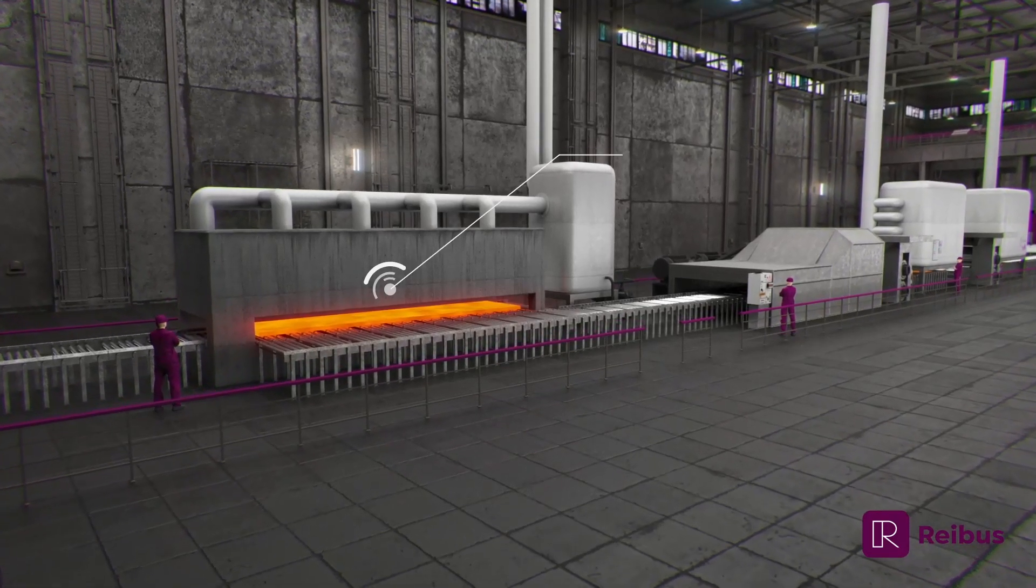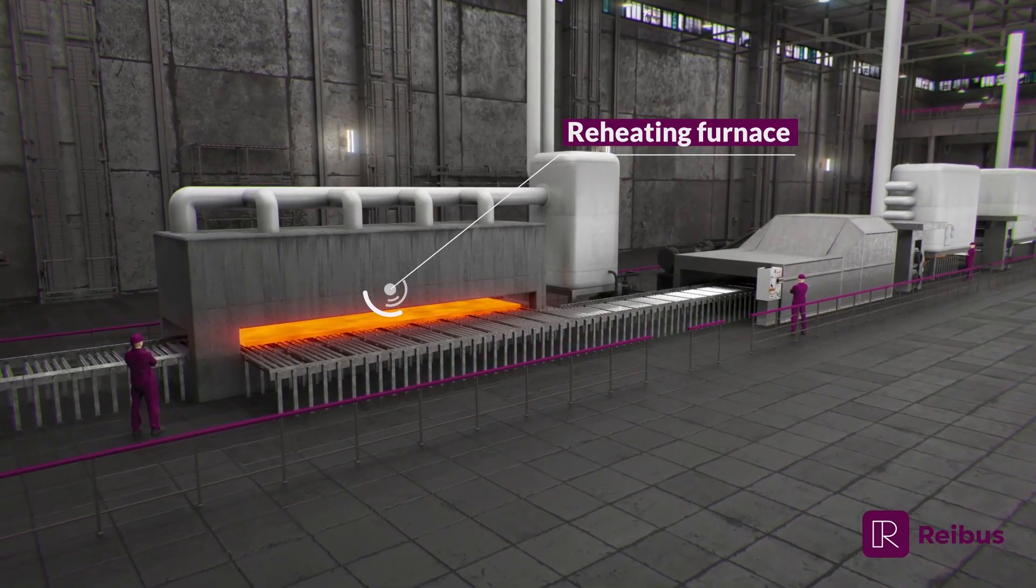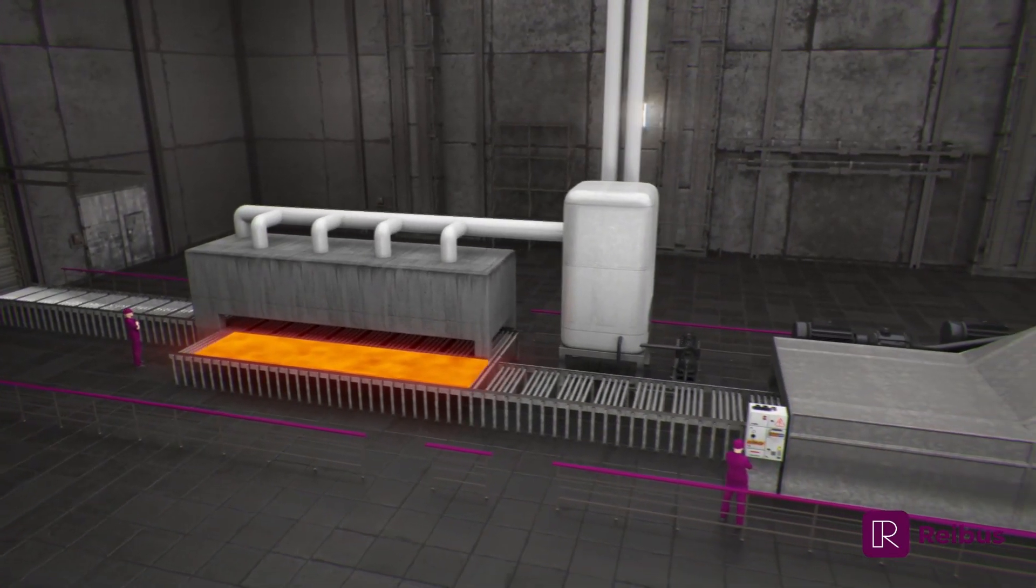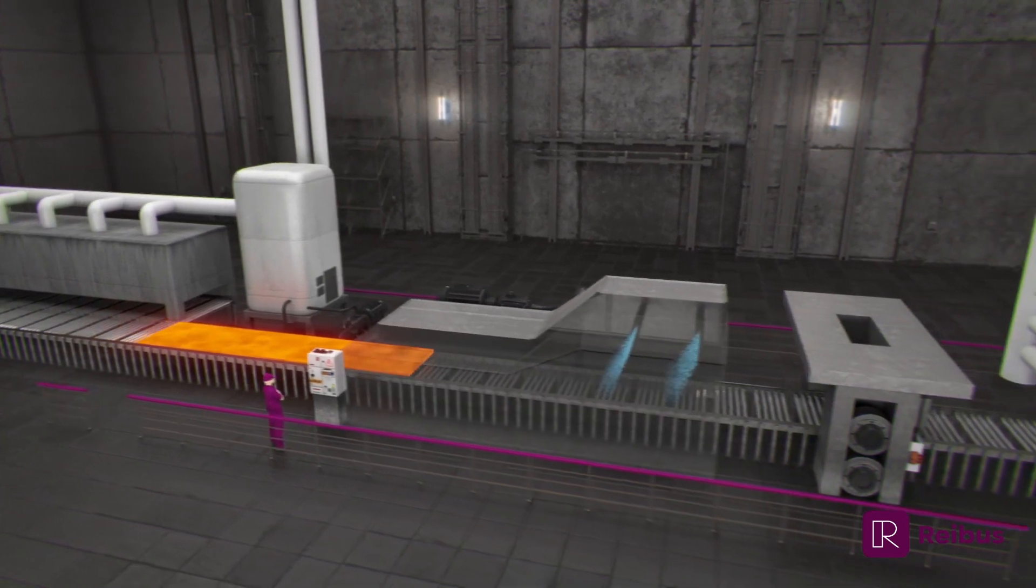Plates are produced in a variety of steel grades and properties for a wide variety of applications. The plate rolling process begins with a slab or bloom exiting the reheat furnace.